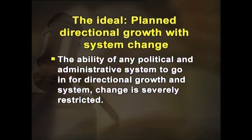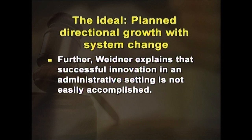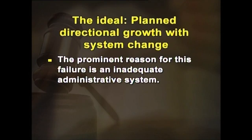However, it has been felt that this ideal set of conditions of planning, system change, and growth does not often evidence itself. This is mainly due to: the ability of any political and administrative system to go in for directional growth and system change being severely restricted; and the ability of an administrative system to carry out a planned program of major change often being severely limited. All the countries of Southeast Asia have formulated five-year plans, and the majority have been a complete failure in practice, primarily due to an inadequate administrative system.